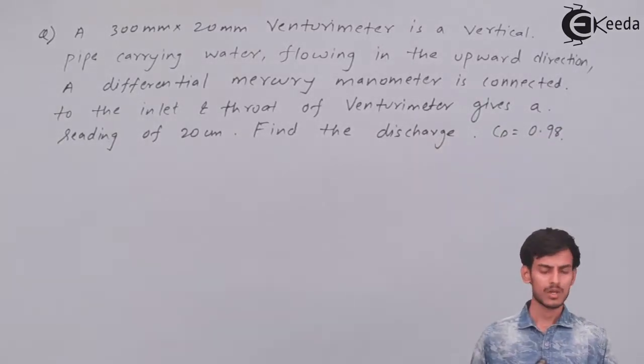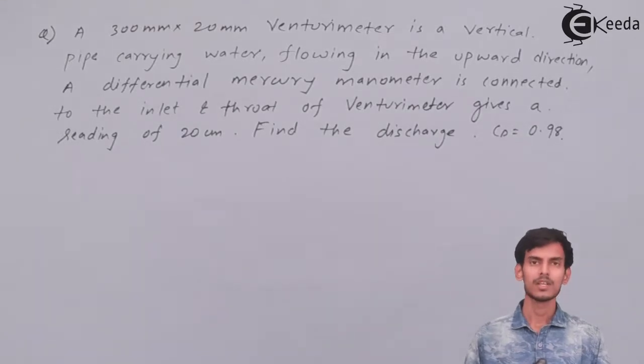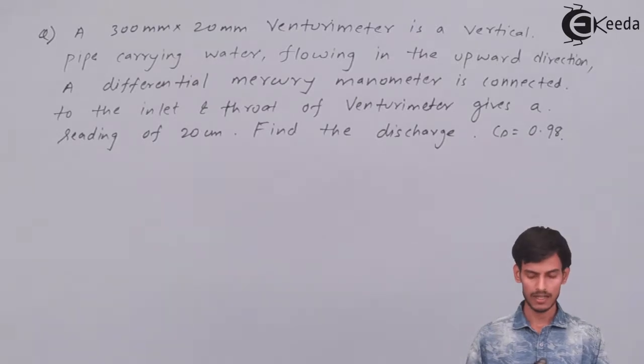So let me read out the question once again. 300 mm by 200 mm Venturimeter is vertically placed carrying water in the upward direction. A differential mercury manometer is connected to the inlet and throat of the Venturi, which gives a reading of 20 centimeters. So we have to find the discharge and the value of coefficient of discharge you have to assume at 0.98.